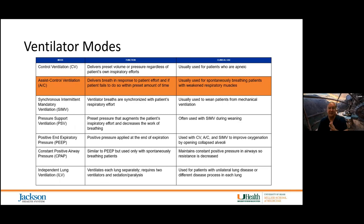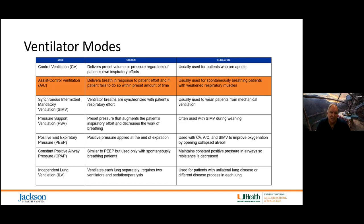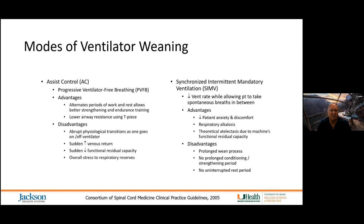I want to talk through ventilator modes. Folks with injuries at C3 and above are going to be on a ventilator, but many with C4 and even C5 spinal cord injury will initially be on a mechanical ventilator. My hope is that when folks come to us on vents, or when we see them in the ICU, they are on assist-controlled ventilation rather than synchronous intermittent mandatory ventilation. This allows us to use a progressive ventilator-free weaning protocol that is much more effective than SIMV.